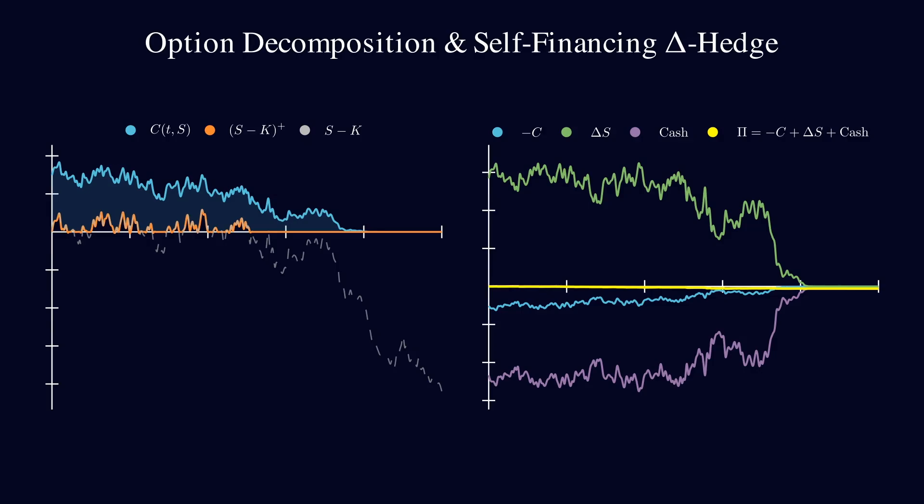And here's the most important part. If you look at the total value of the portfolio, the sum of everything we hold, it stays right around zero the whole time. That's the yellow line. Even though each individual piece, the option, the stock, and the cash moves up and down, the whole portfolio stays flat. That shows our strategy is working. We started with risky assets, like the option and the stock. But by combining them in just the right way, we remove the risk completely. We're not making or losing money, we're just perfectly neutral. And that's what a delta hedge is all about, using the right mix of assets to cancel out risk.